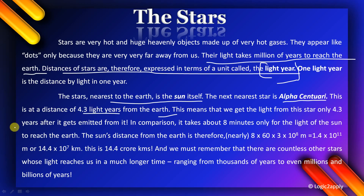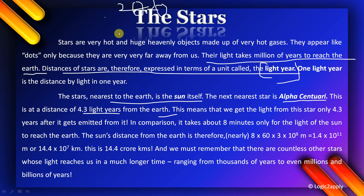How many years ago does light from Alpha Centauri reach us? Think of it this way — if Alpha Centauri emits light in the year 2020, that light reaches Earth 4.3 years later, meaning we receive it around the year 2024.